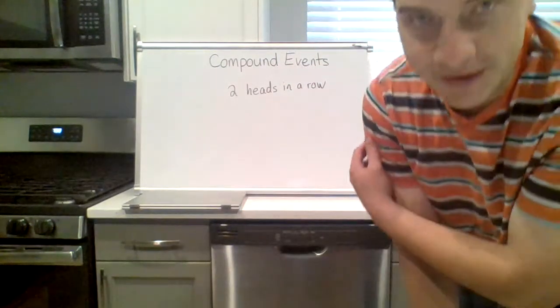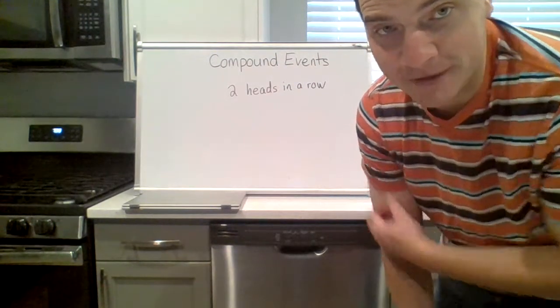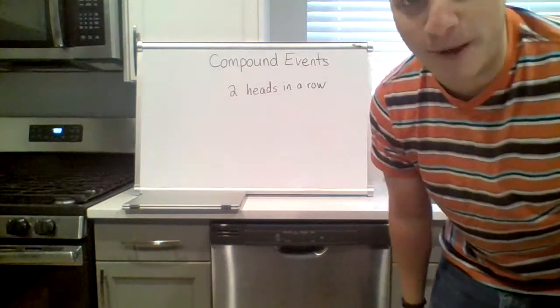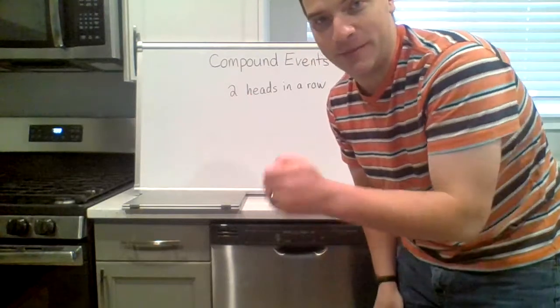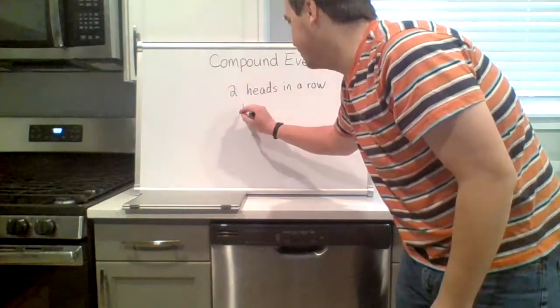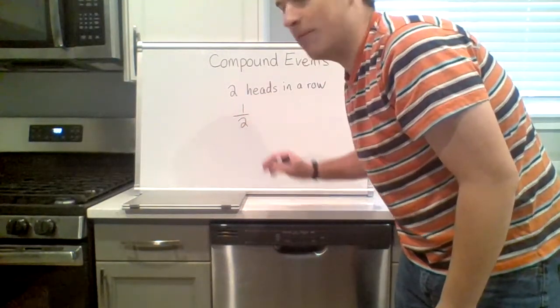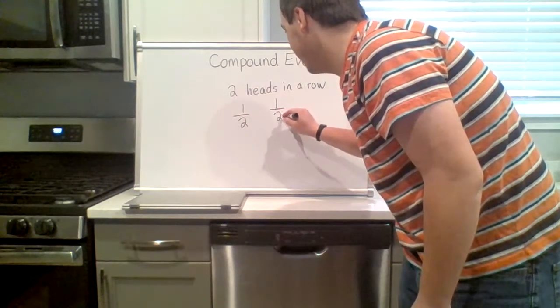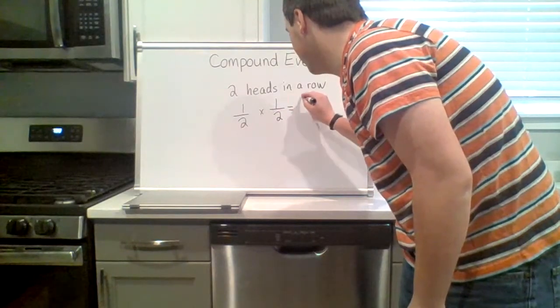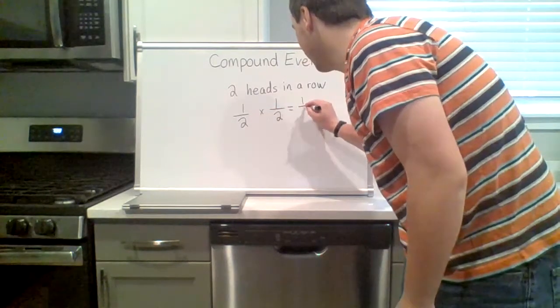Okay, so very simply for compound events all we have to do is find the probability of each event and multiply. The probability that your first coin flip is heads is one half. The probability that your second coin flip is heads is one half. Then you multiply: one times one is one, two times two is four.